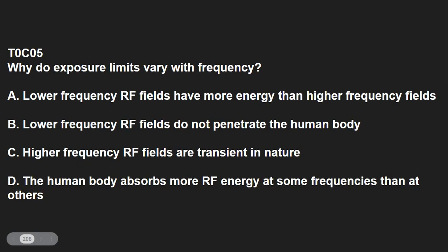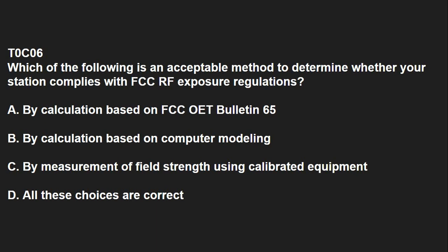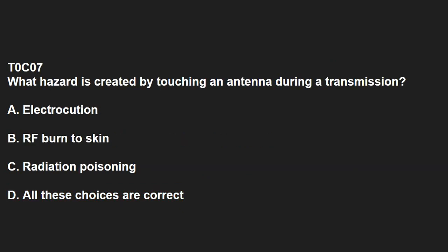T0C05: Why do exposure limits vary with frequency? The human body absorbs more RF energy at some frequencies than others. T0C06: Which of the following is an acceptable method to determine whether your station complies with FCC RF exposure regulations? All of these are correct: by calculations based on FCC OET Bulletin 65, by calculation based on computer modeling, or by measurement of field strength using calibrated equipment. T0C07: What hazard is created by touching an antenna during a transmission? That's RF burns to the skin.